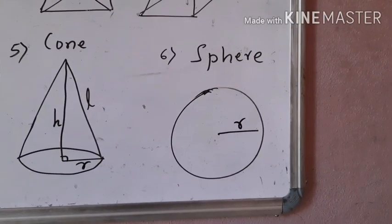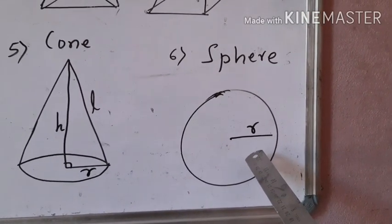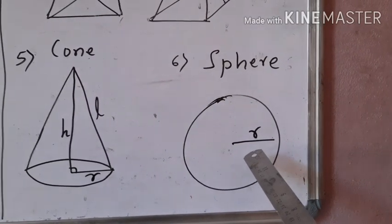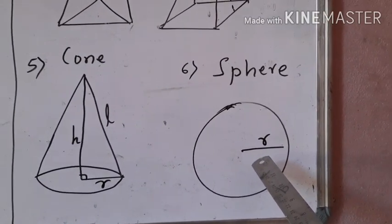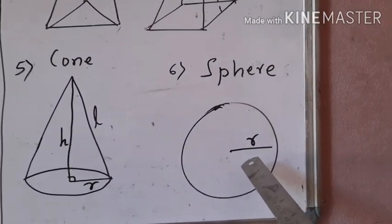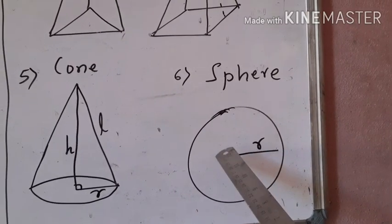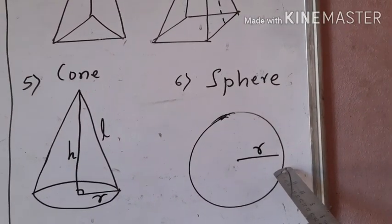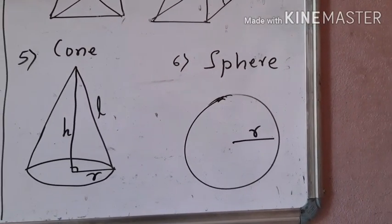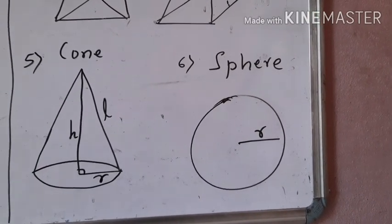One more curved-shaped object we will come across is sphere. Examples for sphere are the planets, the sun, the cricket ball, and volleyball. Sphere is also a 3D shape object with a center and a radius — it will have a diameter also. It is the object which has only one face, that is a curved face.